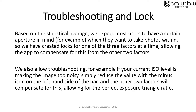We have included troubleshooting and lock features. Based on the statistical average, we expect most users to have a certain aperture in mind which they want to shoot with, so we have created locks for one of the three factors at a time, allowing the app to compensate the other two factors. For example, if your current ISO level is making the image too noisy, simply reduce the value with the minus icon on the left-hand side of the bar. The other two factors within the exposure triangle will compensate for this, allowing the perfect exposure ratio.